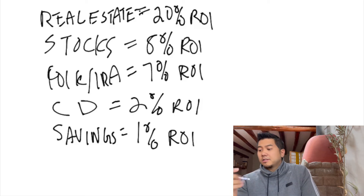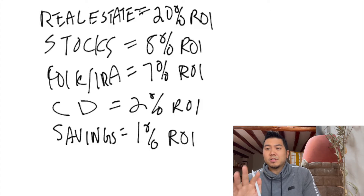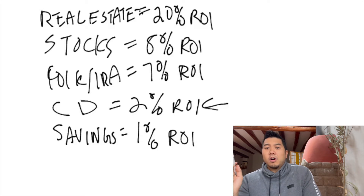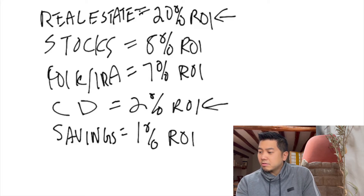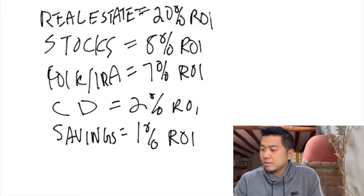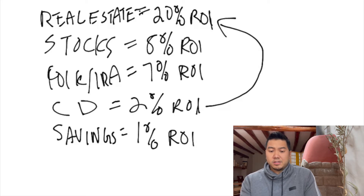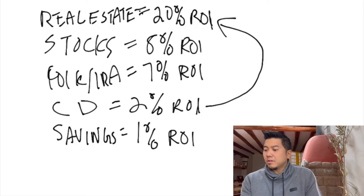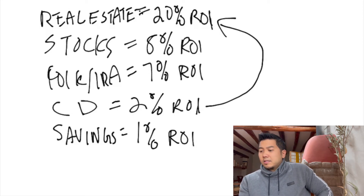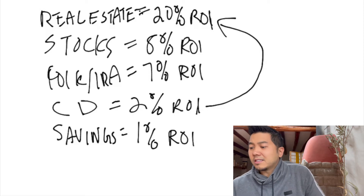The first concept and theory you must understand is that we always want to move our lowest-yielding investment into our highest-yielding investment. The way to financial freedom is going from your lowest yielding to your highest yielding. We want to allocate our money — let's say we have $50,000 in each of these investment categories.